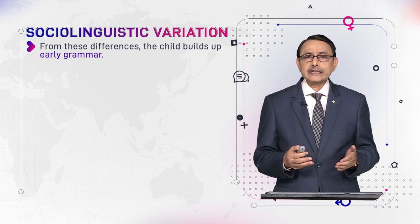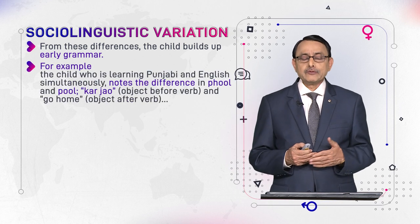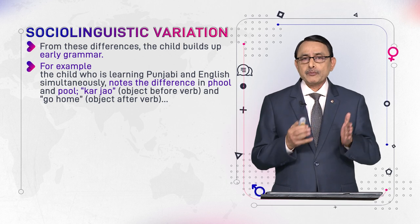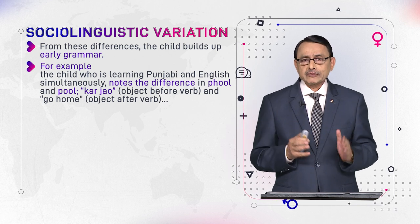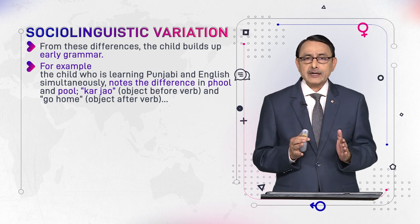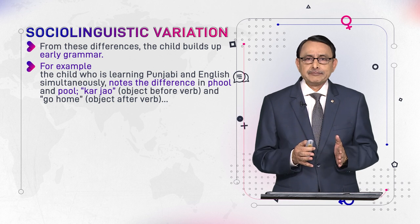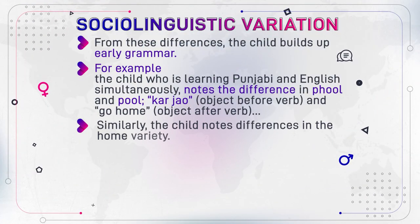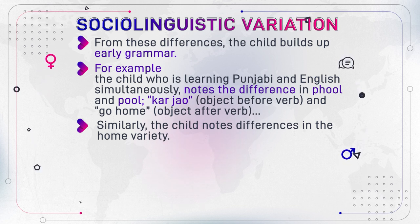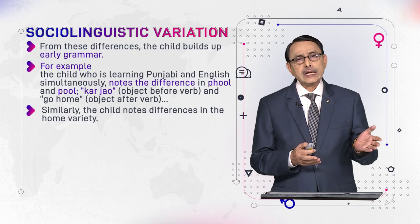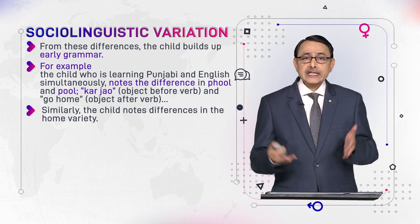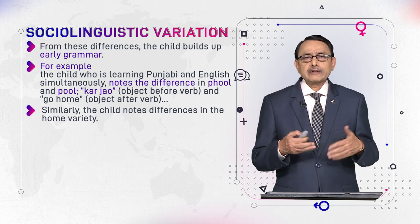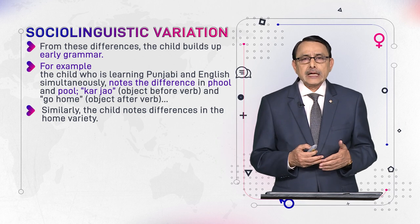We have said that by birth we have an ability to acquire any language of the world. For example, a child learning Punjabi and English simultaneously notes the difference — such as the aspirated sound 'pha' in Punjabi that does not occur at the beginning of a syllable in English words like 'pool'. Similarly, in Punjabi the phrase 'kar ja' places the object first and the verb after, whereas in English we say 'go home' — the verb comes first, followed by the location.